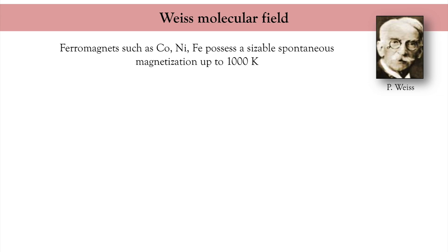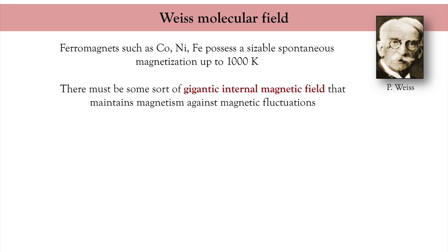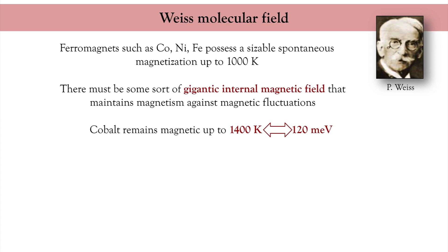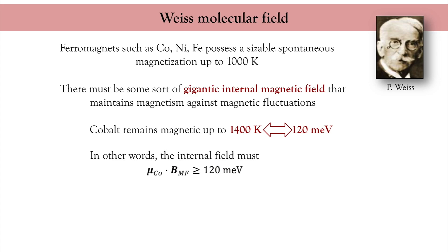This means that the energy determining this magnetic order must be larger than the energy associated with thermal fluctuations at 1000 Kelvin. In the language of classical physics, there must be a gigantic internal magnetic field that maintains neighboring spins aligned with each other. This idea was originally put forward by Pierre Weiss. For cobalt with a transition temperature of 1400 Kelvin, the thermal energy corresponds to 120 meV, so the Zeeman energy associated with this hypothetical internal field must also be about 120 meV.